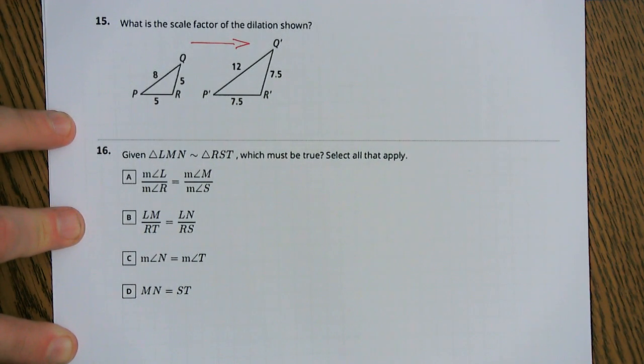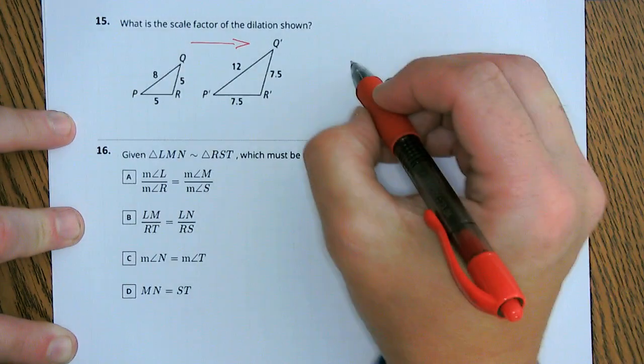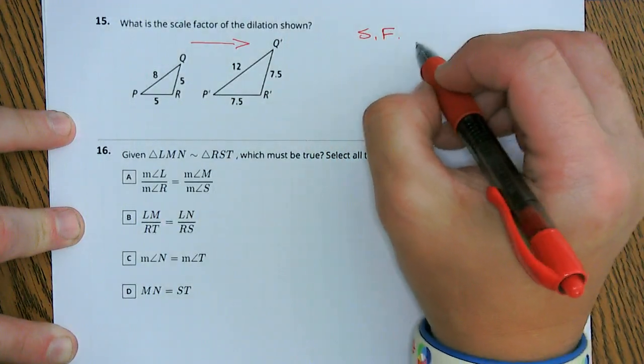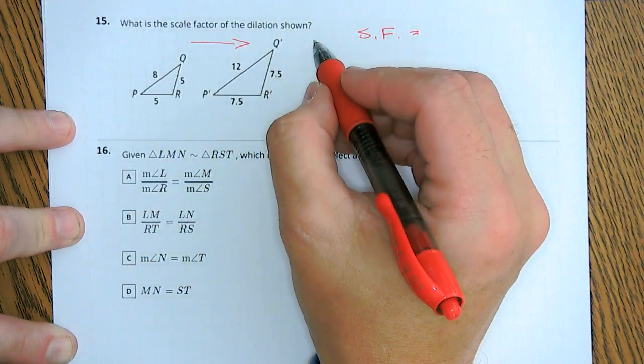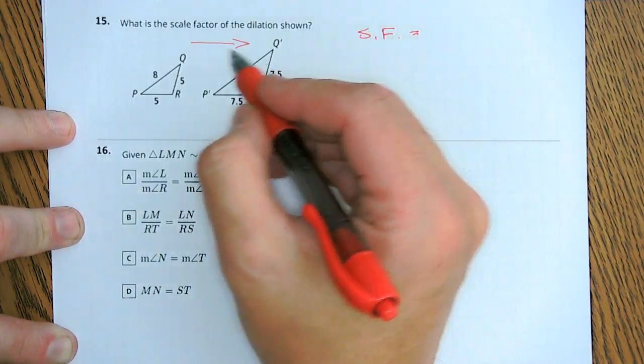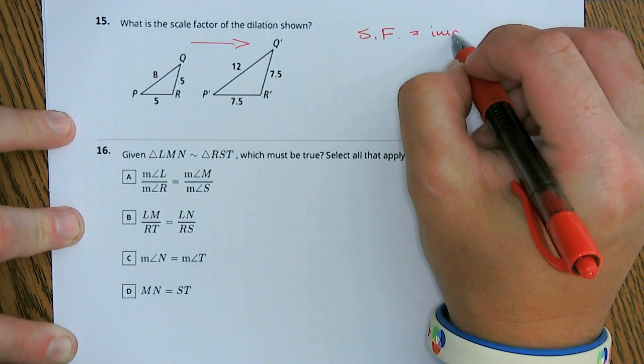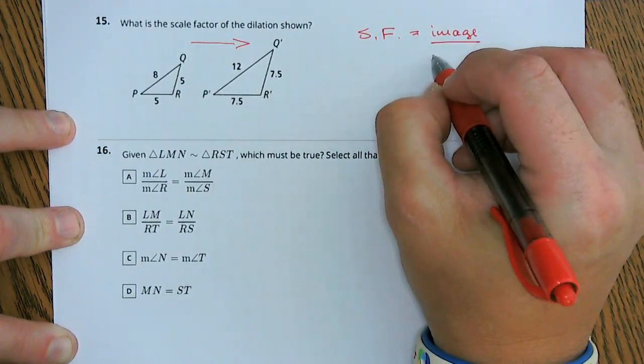Now how much smaller are we getting? Well that's what we're trying to figure out, what's our scale factor? So our scale factor is where we end up divided by where we start, right? Our image divided by the pre-image.